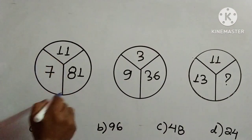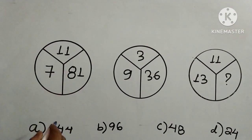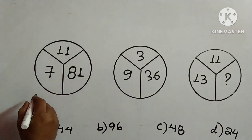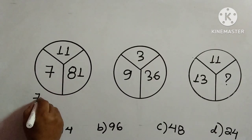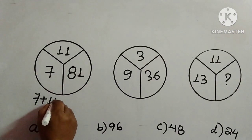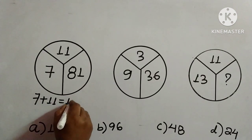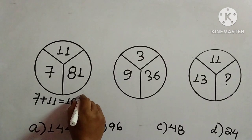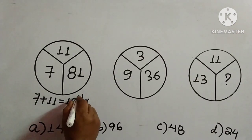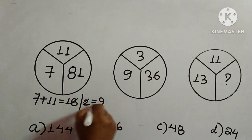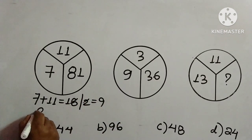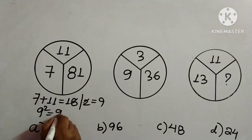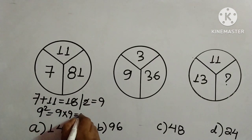We will begin with the first figure and try to work out. So here, 7 plus 11 is equal to 18. And what we will do? We will divide 18 by 2, so what we will get is equal to 9. Then we will square it. 9 squared, so 9 into 9 is equal to 81.